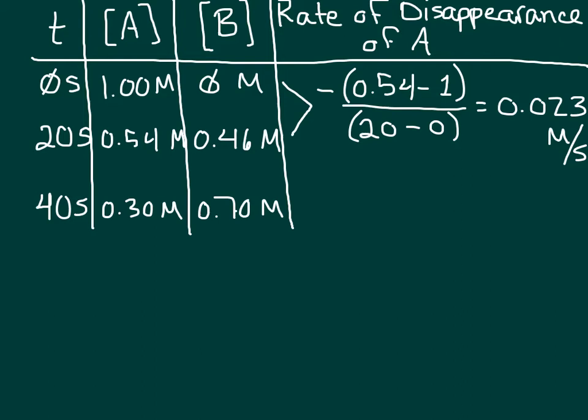The negative sign is in there to indicate that the concentration of A is decreasing, but rate is always expressed as a positive value. And we find that there's a rate for this reaction of 0.023 molarity per second.